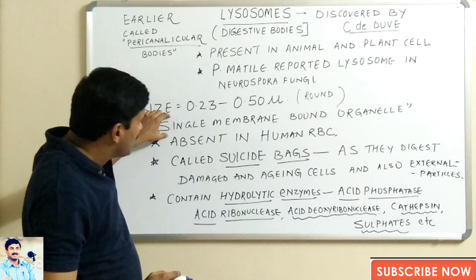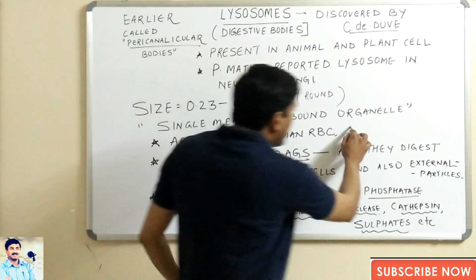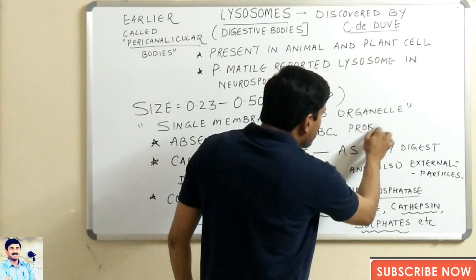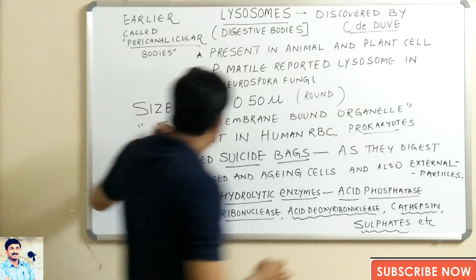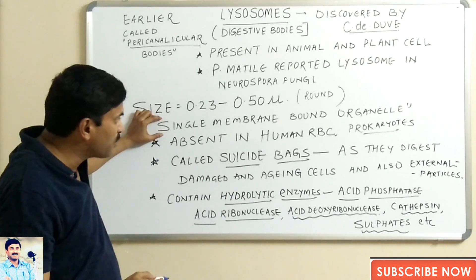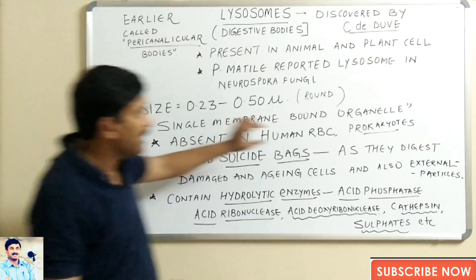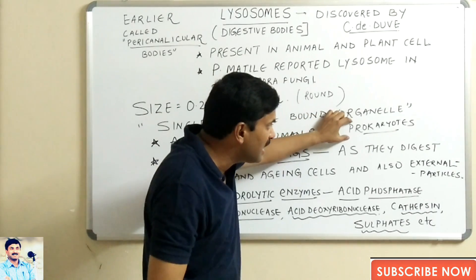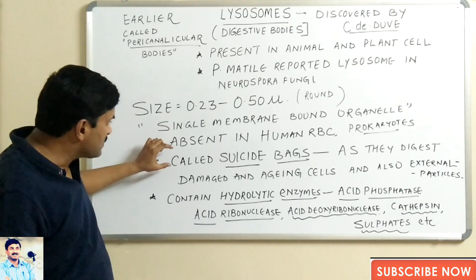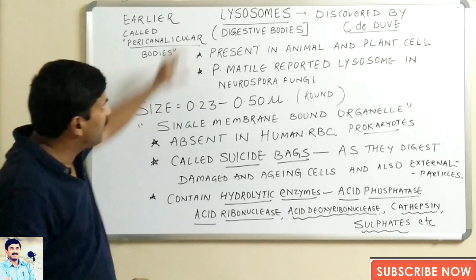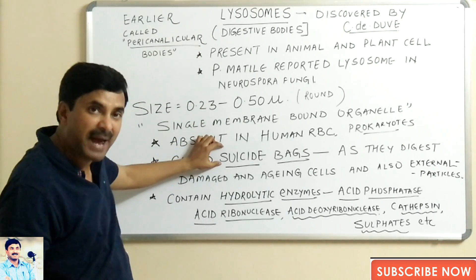The size of lysosomes is very small. They are round structures and their size varies from 0.23 microns to 0.50 microns. They are single membrane-bound organelles and they are absent in human RBCs as well as in prokaryotes.